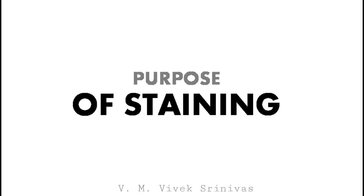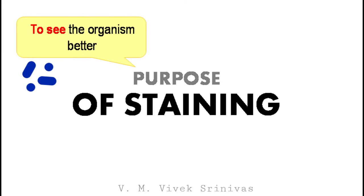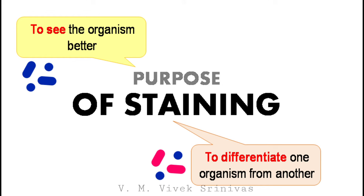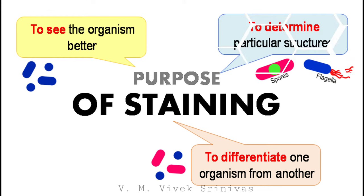The purpose of staining. The first purpose is to see the organisms better under the microscope. Secondly, to differentiate one organism from another. Lastly, to determine or to demonstrate the particular structures of the bacteria, like the bacterial spore, the bacterial flagella, and so on. These are the purposes for staining.